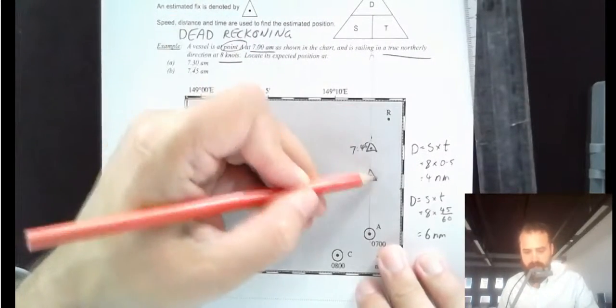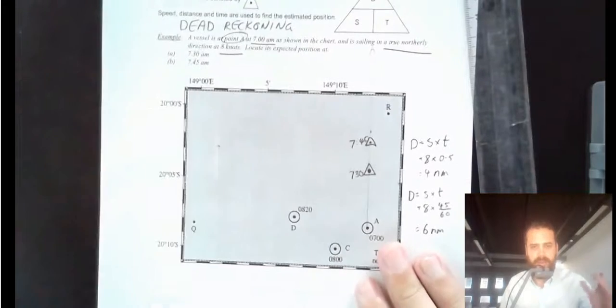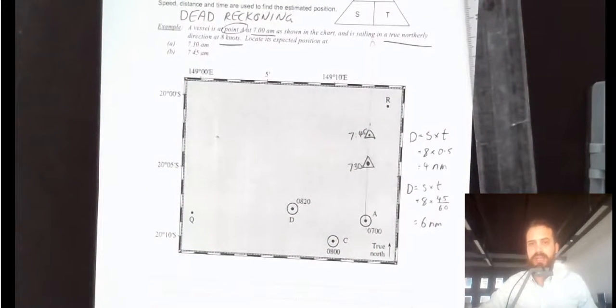You just rule a line, and then you travel along that line. Okay, that's Dead Reckoning. It's an estimate of your position based upon your speed and the time that you've been traveling.